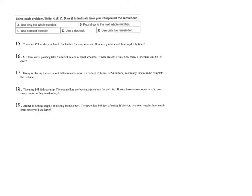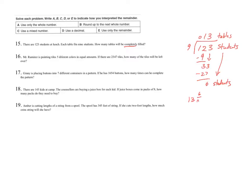Question 15 says there are 123 students at lunch. Each table fits nine students. How many tables will be completely filled? There are 123 students divided into groups of nine — each table seats nine students. Doing division: 9 does not go into 1, but goes into 12 once; 9 goes into 33 three times. There is a remainder of 6 students. So I have 13 and six ninths tables filled. I only care about completely filled tables — that last table only seats those 6 leftover students, so my answer is 13 completely filled tables. I ignored the remainder — Strategy A.